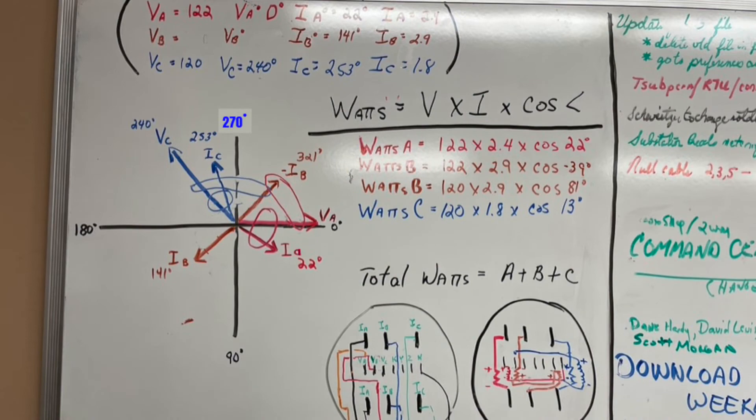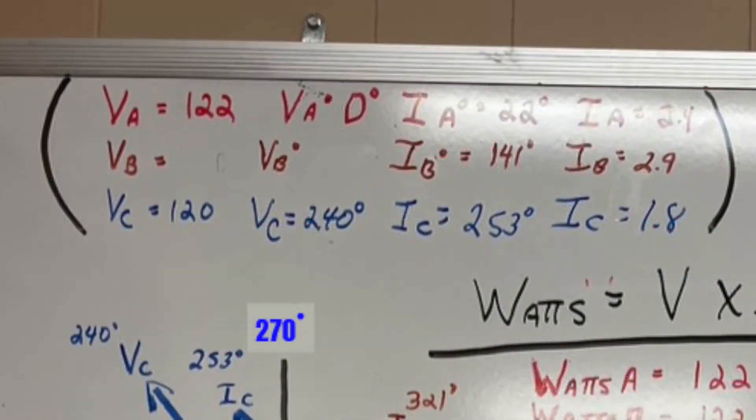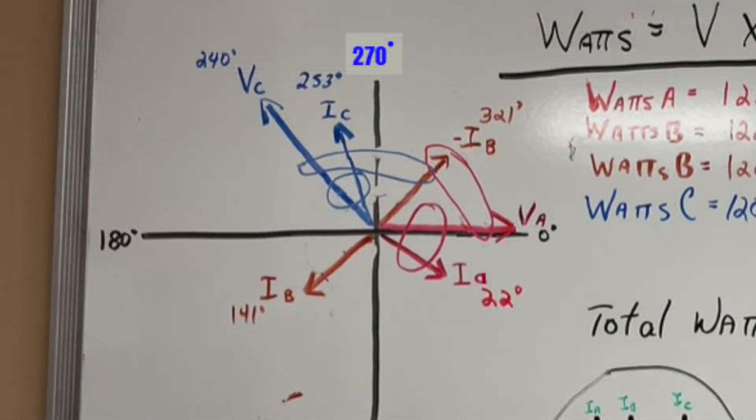This is a Form 6 meter and as you can see in the given values, we no longer have a voltage B value or a voltage B angle. We're going to go ahead and plot these given values on the chart and we will have voltage A at zero degrees, current A at 22 degrees, we have current B at 141 degrees, and we have voltage C at 240 degrees and current C at 253 degrees.